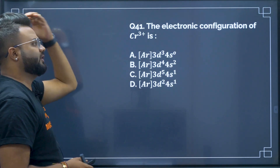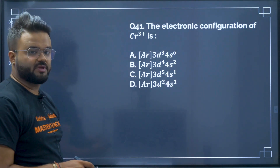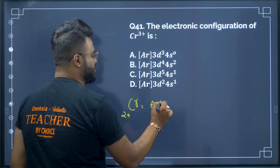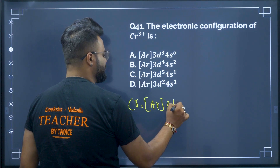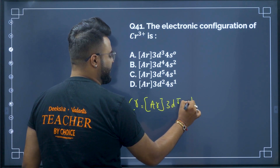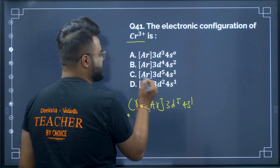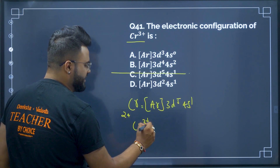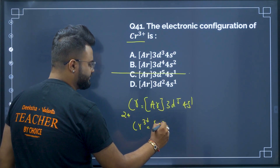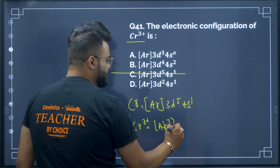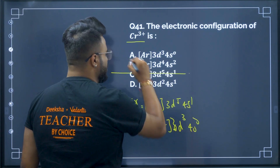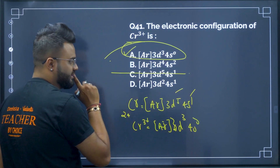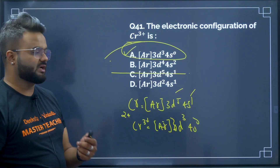Question number 41: the electronic configuration of Cr3+. Chromium is [Ar] 3d5 4s1. For Cr3+, we remove 3 electrons: first the 4s1 electron, then two from 3d5, giving [Ar] 3d3 4s0. Therefore option A will be your correct answer.